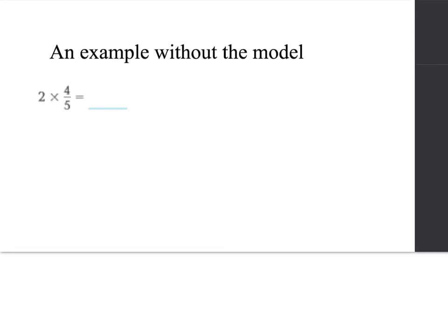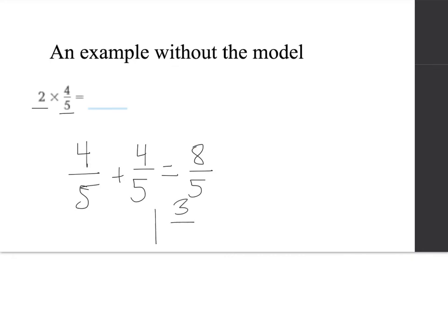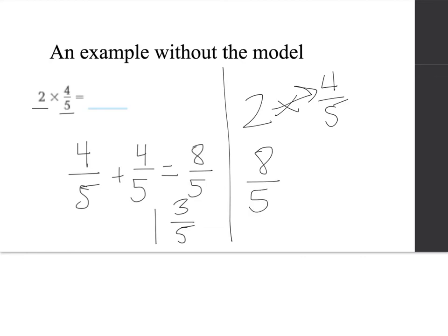Let's try this one without the model there to help us. If we're showing two groups of four-fifths, we can use repeated addition, which would be four-fifths plus four-fifths, because we're showing two groups, for a total of eight-fifths. And you've probably already noticed that this is a fraction greater than one, so we ask ourselves how many times does five go into eight? We can get one group with three left over. So on this side, let's show the multiplication of two groups of four-fifths. We multiply our whole number times the numerator for a total of two times four is eight-fifths. And again, when we convert that to a mixed number, we're able to make one whole with three-fifths left over.